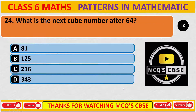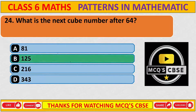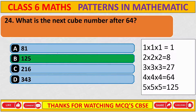What is the next cube number after 64? The correct answer is B: 125. The cube numbers are: 1³=1, 2³=8, 3³=27, 4³=64, and 5³=125. Therefore, the answer is 125.